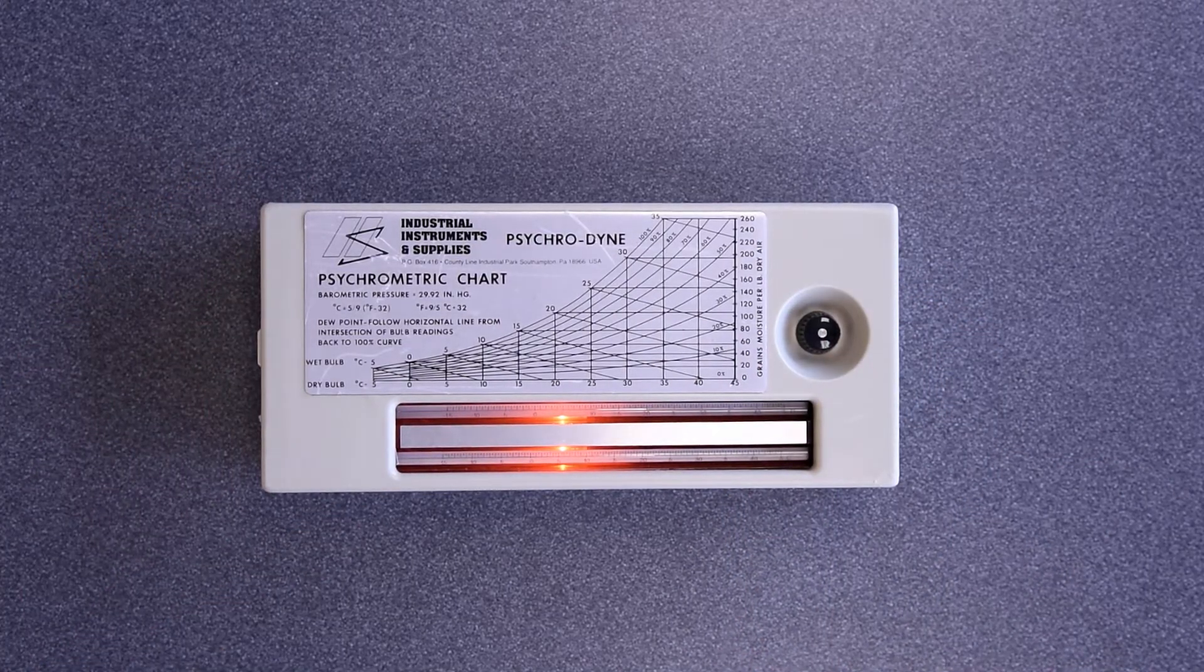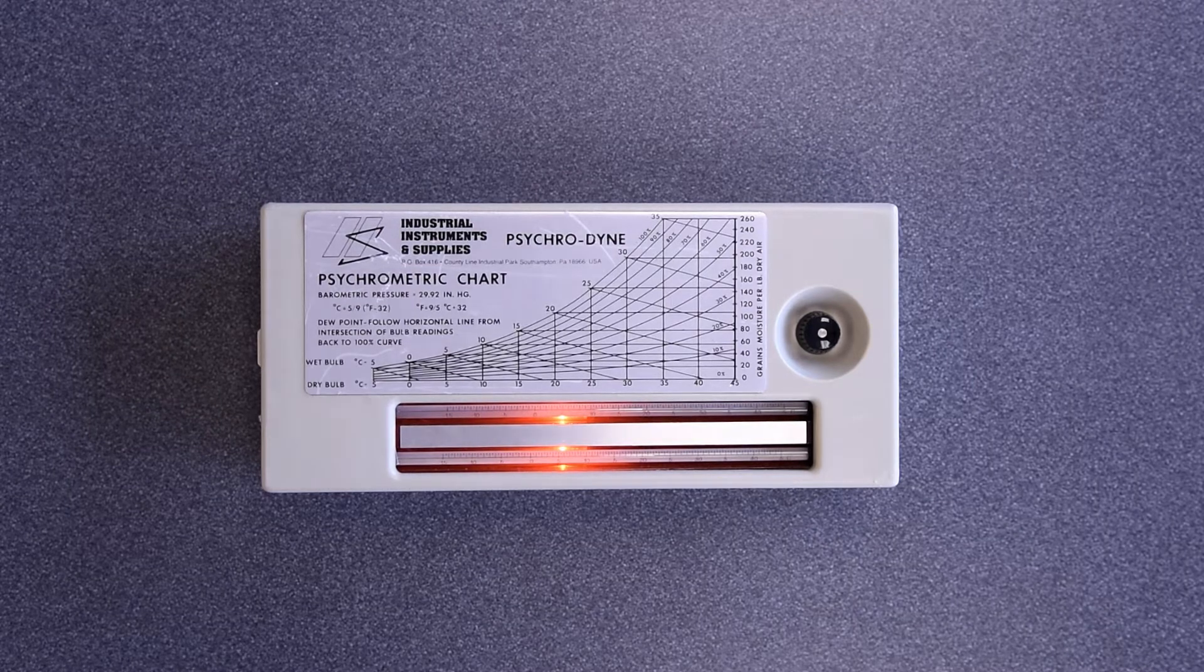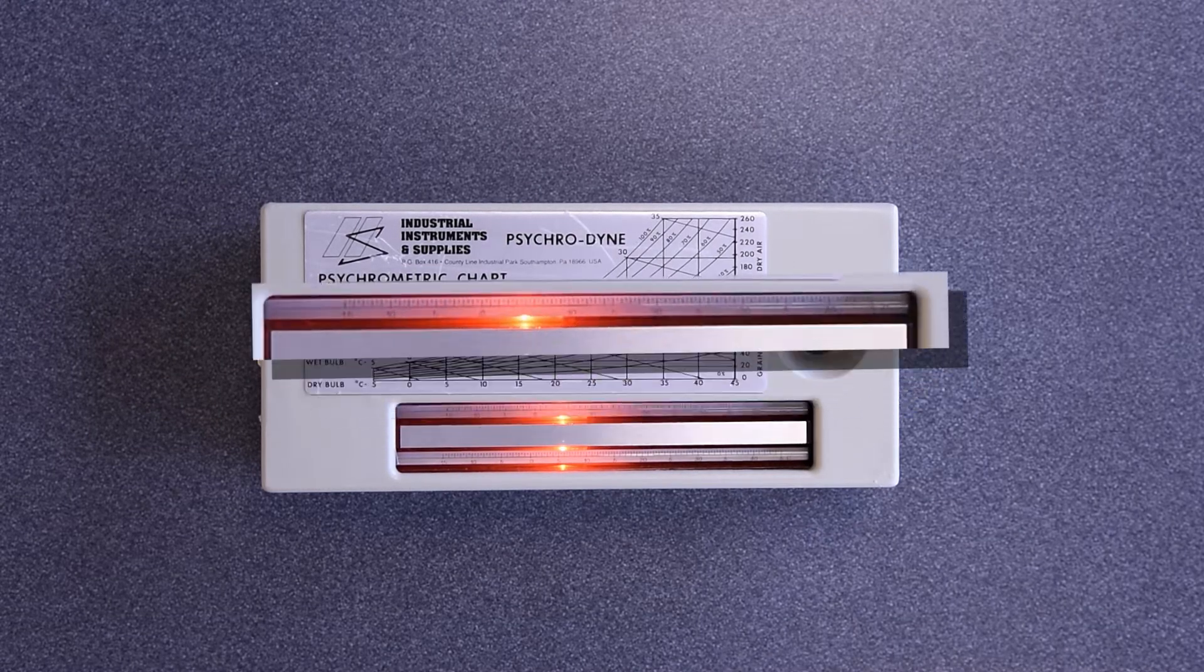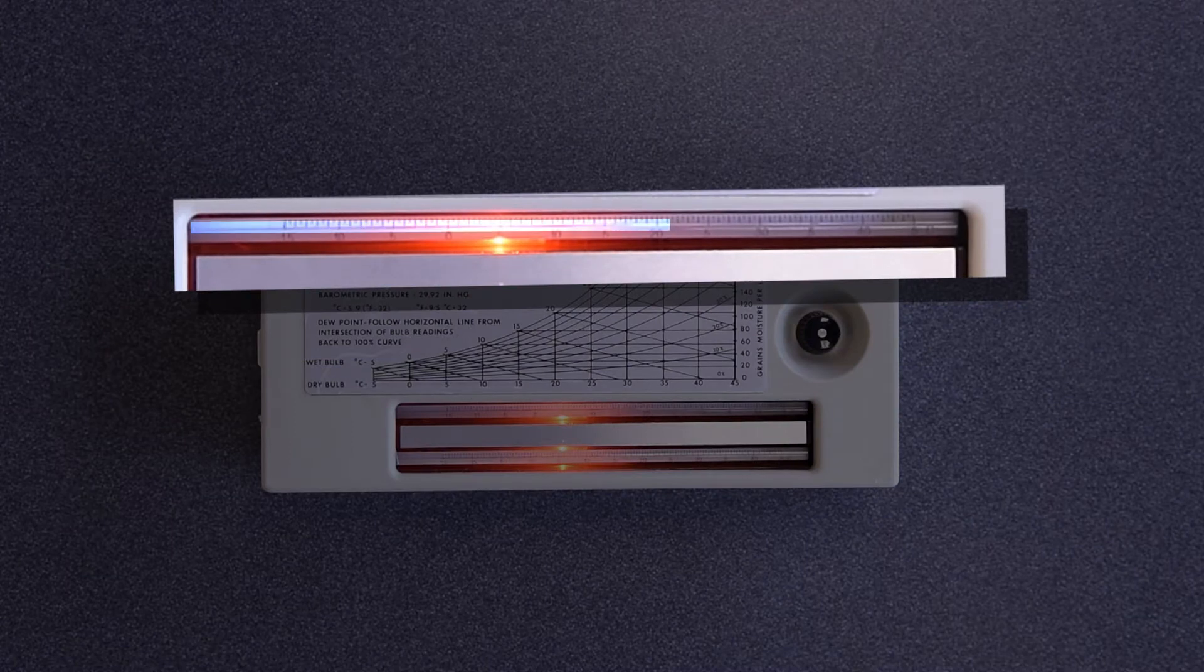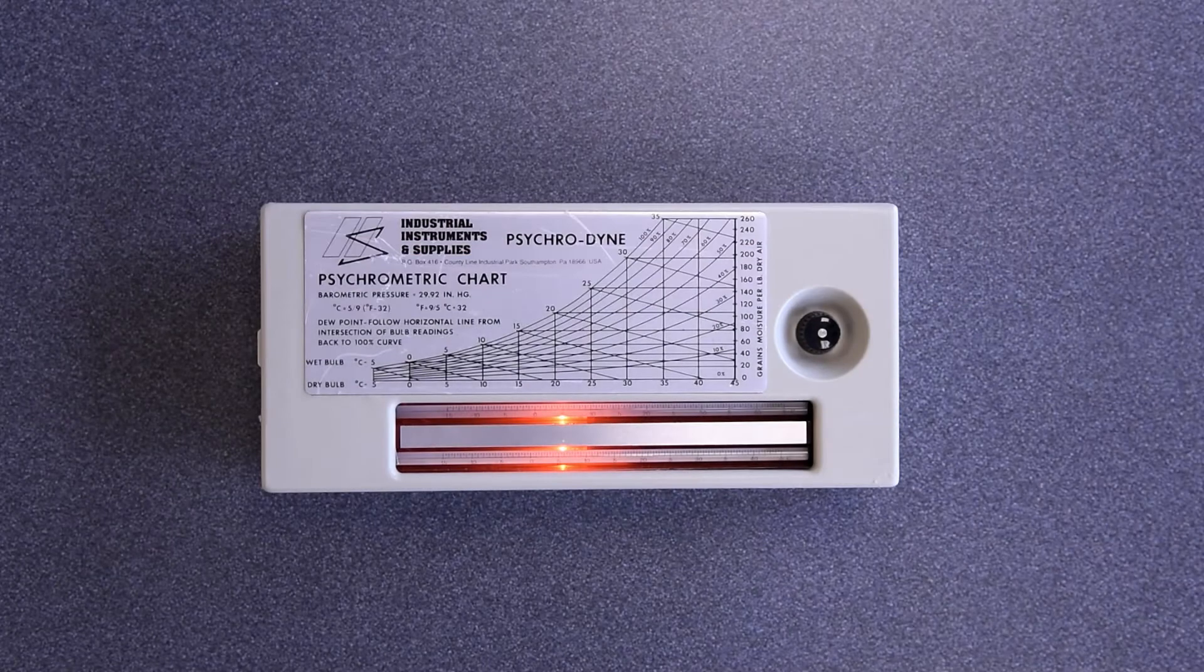As water evaporates from the wet sock, the wet bulb is cooled. You will see the temperature on the wet bulb thermometer dropping. The amount that the wet bulb is cooled depends on the amount of moisture in the air.